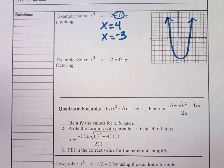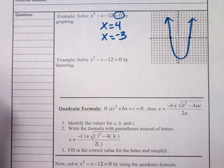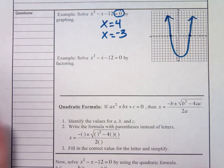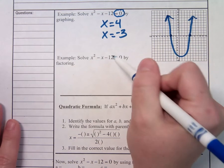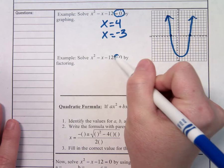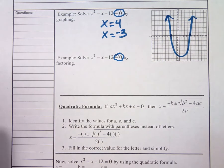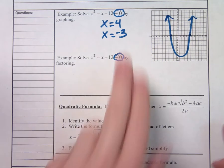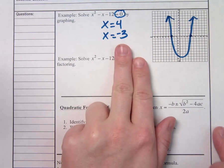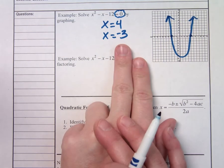You probably used a minus sign instead of a negative, or a negative sign instead of a minus sign — that's what I would imagine. If I want to solve the same one by factoring, let's make sure it says equals zero. Does it say equals zero? Okay, let's solve by factoring this time.